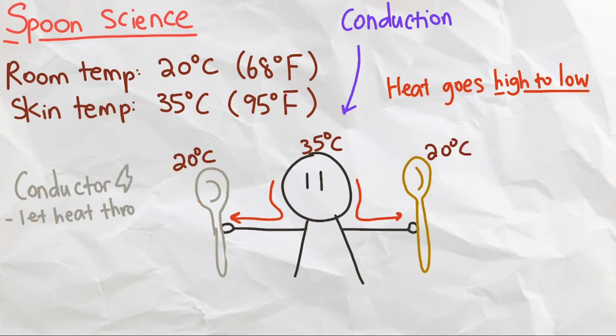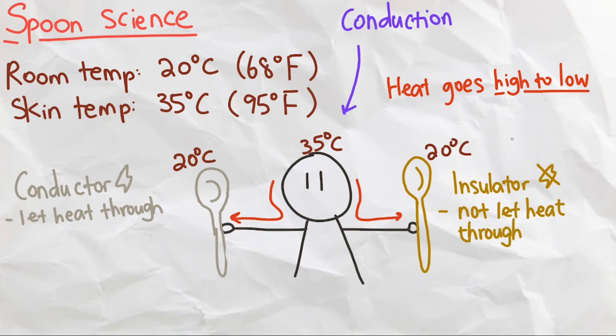The metal spoon is made of, well, metal, which generally are good conductors, which are materials that easily let heat and electricity pass through them, while wood is an insulator, which makes it harder for heat and electricity to pass through.